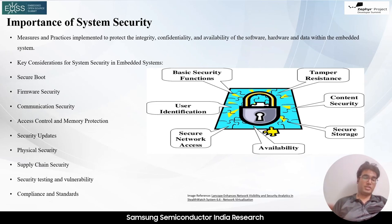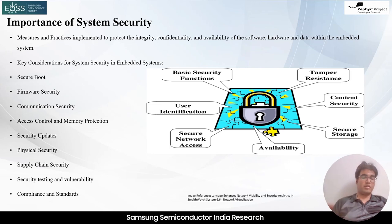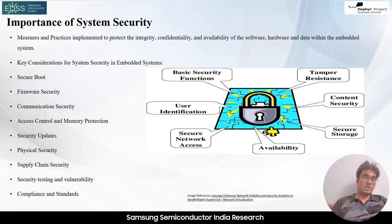Firstly, it safeguards the confidentiality and integrity of sensitive data. Industries handling financial transactions, personal information, or intellectual property must prevent unauthorized access and protect against data breaches to maintain trust and regulatory compliance. Secondly, system security ensures the availability and reliability of embedded systems. Industries relying on real-time operations such as manufacturing or healthcare cannot afford system failures or disruptions. By implementing robust security measures, these systems remain resilient against attacks and maintain uninterrupted functionality.